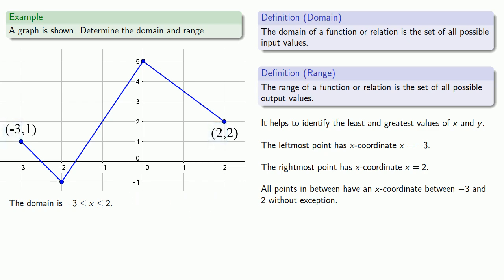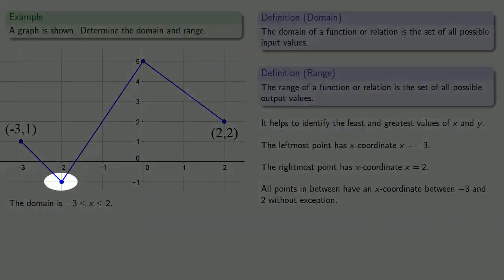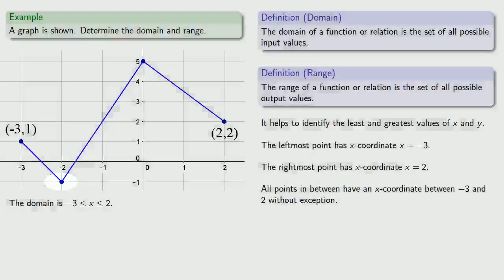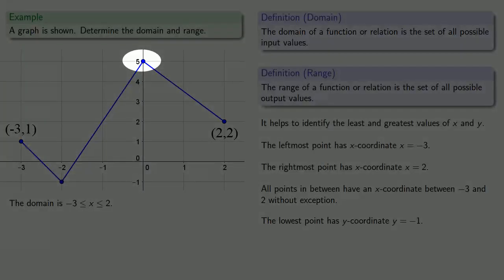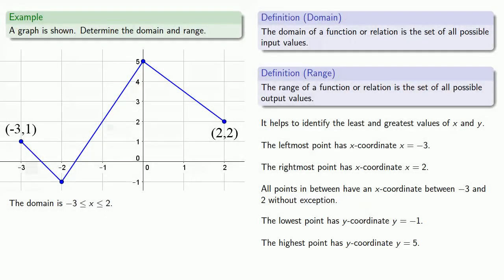Meanwhile, the lowest point on the graph has y coordinate negative 1, and the highest point has y coordinate 5. So the range is negative 1 less than or equal to y less than or equal to 5.